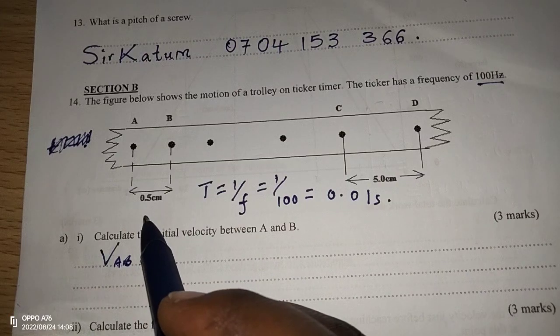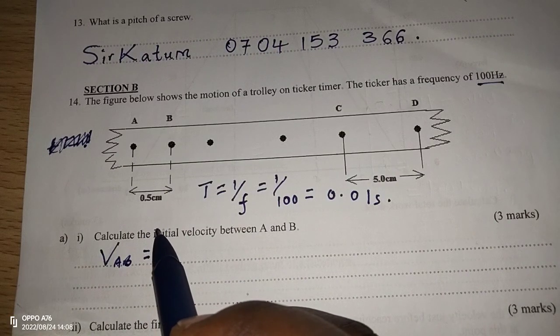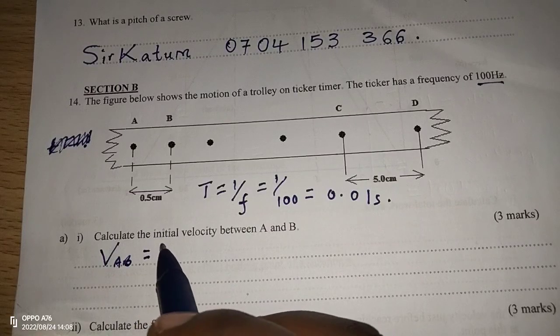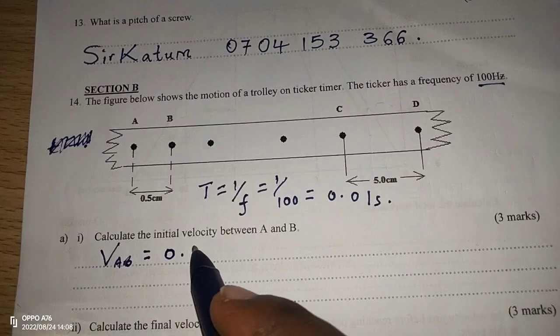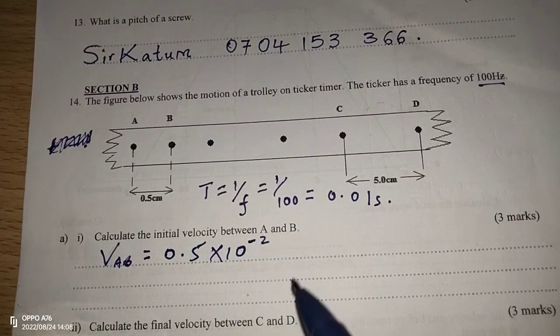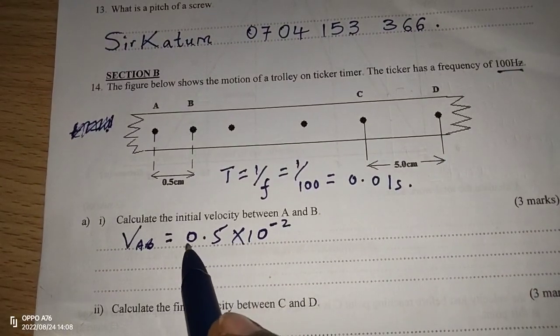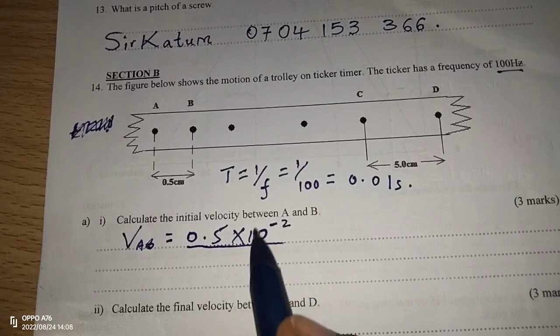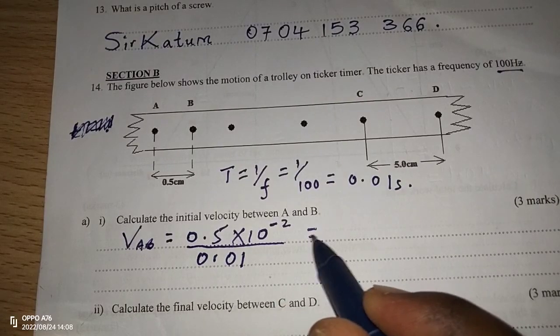So, the distance is 0.5 cm, which has to be divided by 100 to change to SI units. We're going to have 0.5 divided by 100, can be expressed as multiplied by 10 to the power of negative 2. Then, we divide by time, which is going to be 0.01 seconds.